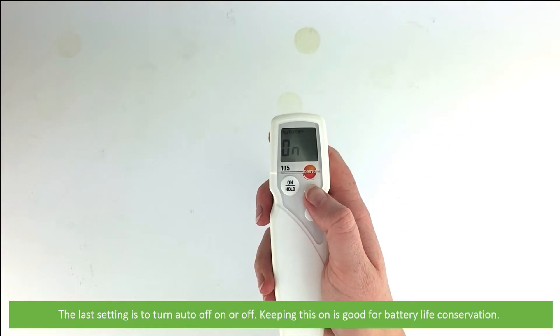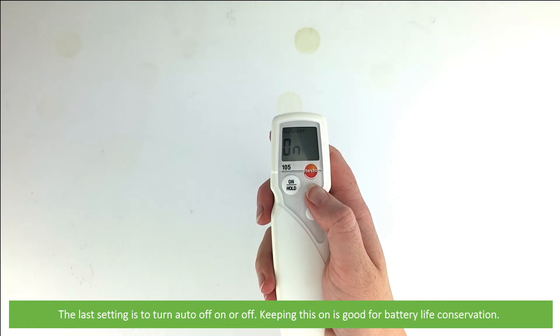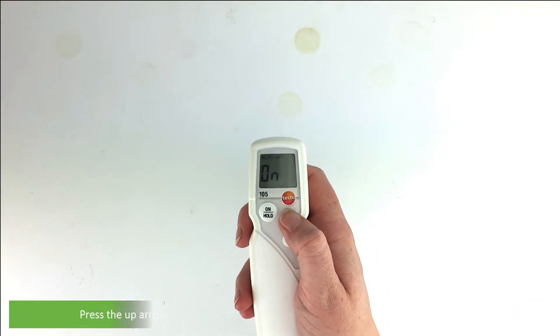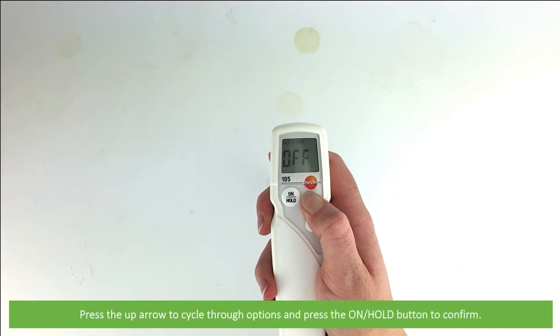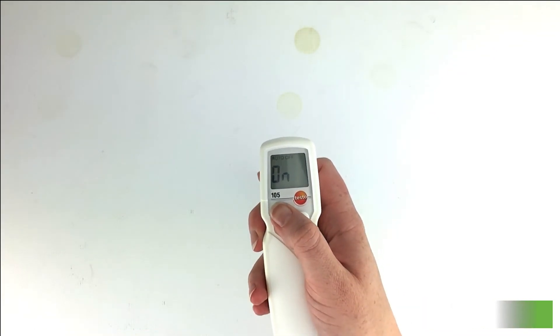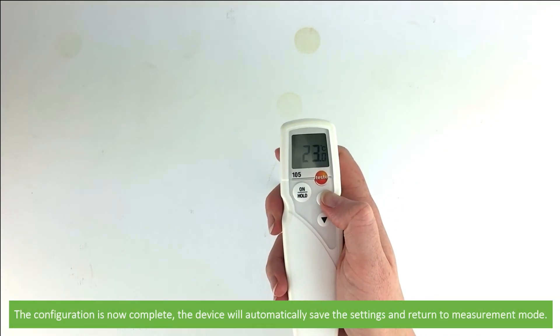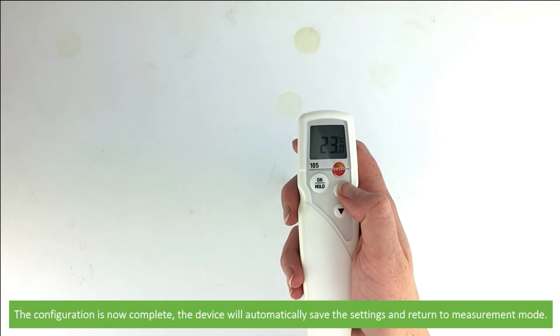The last setting is the auto off function turned on or off. Keeping this on is good for battery life conservation. Press the up arrow to cycle through the options and on hold to confirm. The configuration is now complete. The device will automatically save the settings and return to measurement mode.